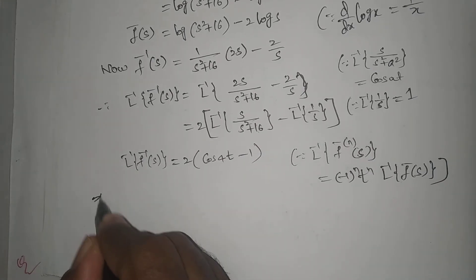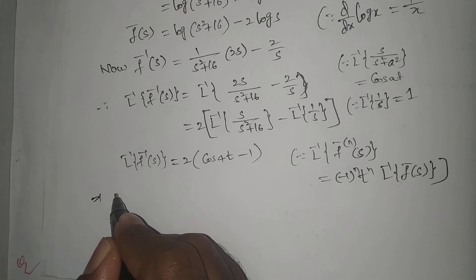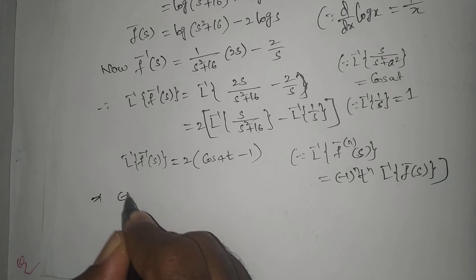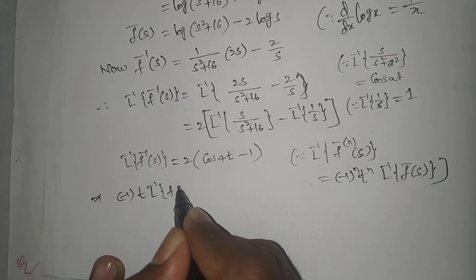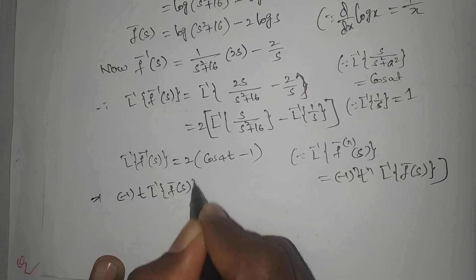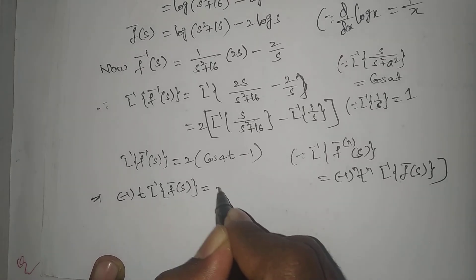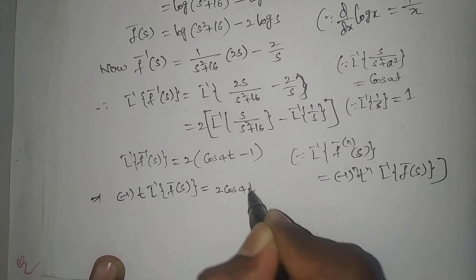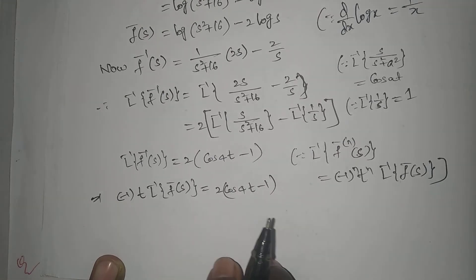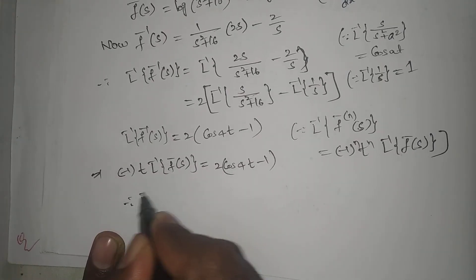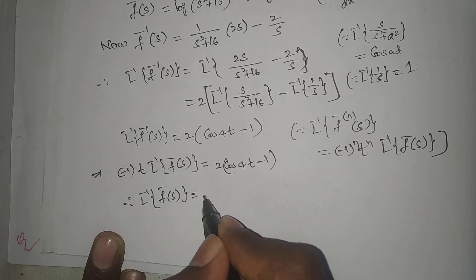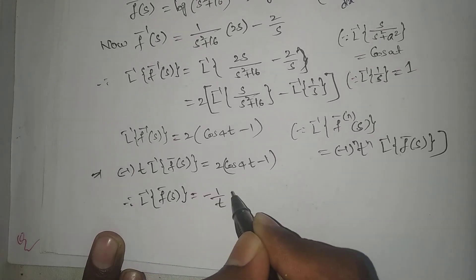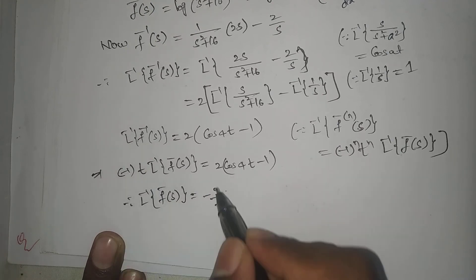That implies (-1/t)L⁻¹{f̄(s)} = cos(4t) - 1, which gives us (1 - cos(4t))/t.